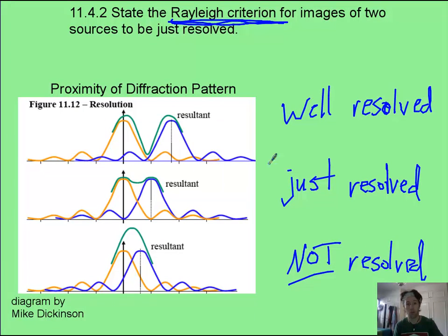For the Rayleigh criterion, the magic one is this one here. And they're going to be just resolved when the maximum of the central diffraction pattern, or the central fringe, lines up just on top of the first dark fringe. And the same thing happens over here. The brightest spot lines up right on top of the first minimum there. That is our Rayleigh criterion.